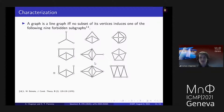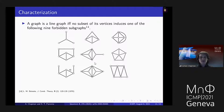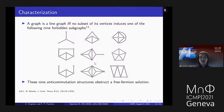Line graphs have an extensive characterization. One really interesting one is the forbidden subgraph characterization given by Beineke. A graph is a line graph if and only if no subset of its vertices induces one of the following nine finitely-sized forbidden induced subgraphs. If any subset of vertices induces one of these graphs, the graph is automatically not a line graph. We can think about these nine anticommutation structures as being finite-size obstructions to a free fermion solution, showing that the obstructions are finite.